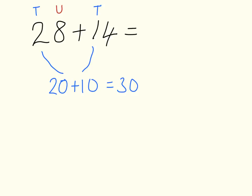So let's go find our units. Here they are. I've got 8 and I've got 4. Now 8 and 4. Now I might need to use a bit of bridging here. So 8 and 2 gives me 10. Add on the other 2 gives me 12.